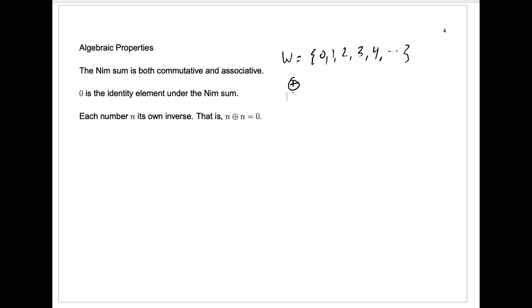What does that mean? Well, the number 0 is the identity element here using this operation, because if you have any number n, and you take the Nim sum with 0, you get n, and certainly 0 plus n is also n.